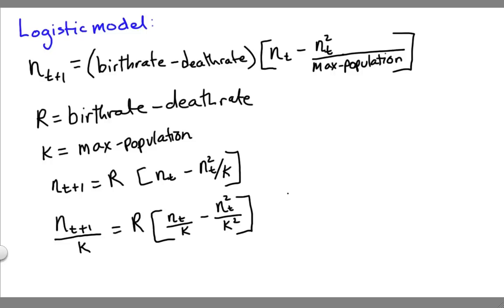And now I'm going to define one more new symbol, and that's going to be x sub t is equal to n sub t over k. So now I can rewrite this equation using my new symbol x.